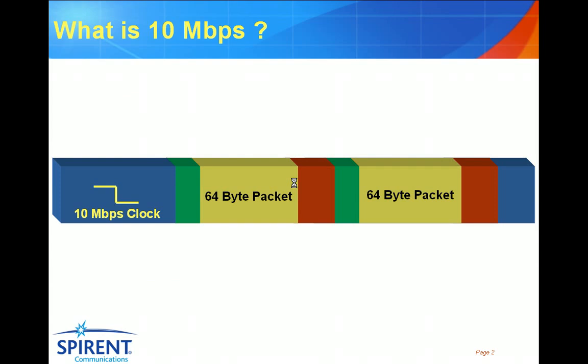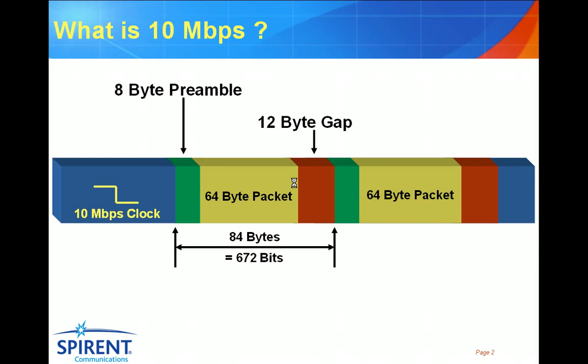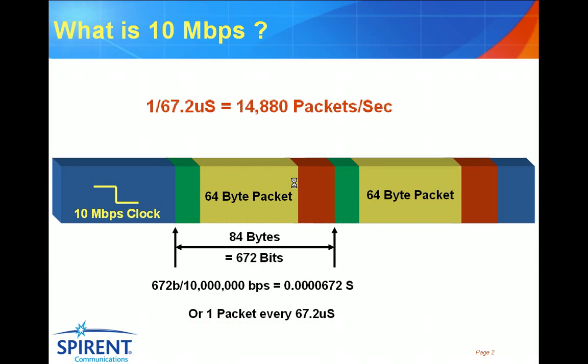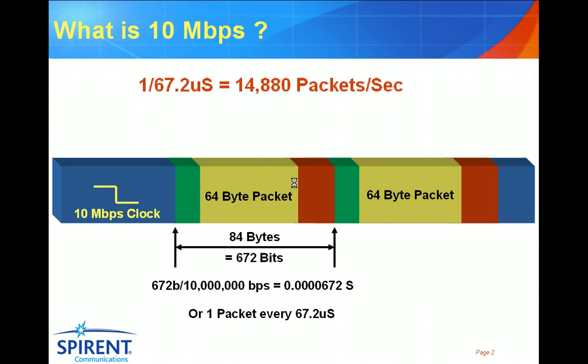Before we take a look at 100 gig, let's take a look at where we came from — back to the days of 10 Meg. Many people believe that the smallest packet size is 64 bytes, but remember there is an 8-byte preamble and a 12-byte gap. So all in all, the smallest packet size is really 84 bytes, which is about 672 bits. That means we can transmit one packet at 10 Meg every 67.2 microseconds, or 14,880 packets per second.